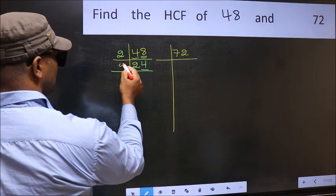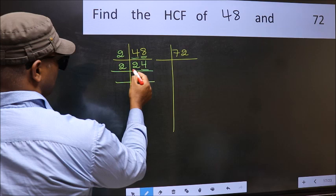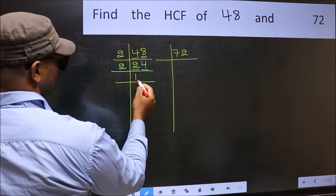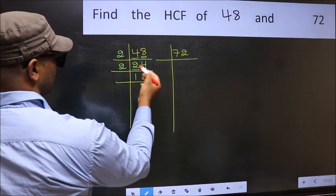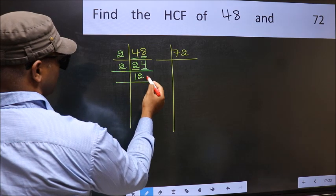Now last digit 4, even, so take 2. First number 2, when do we get 2 in 2 table? 2 times 1 is 2. The other number 4, when do we get 4 in 2 table? 2 times 2 is 4.